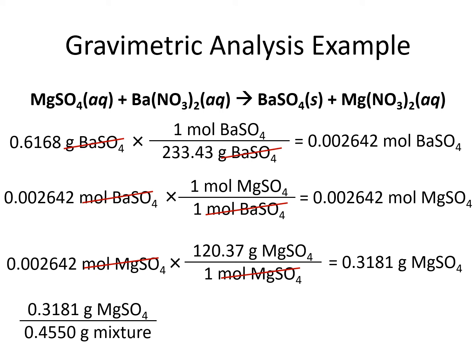We take the amount of magnesium sulfate that was in the original mixture and divide by the mass of the whole mixture, which we were given in the problem — it would have been weighed out in the lab. Finally, we multiply by 100 to get a percentage and come out with 69.91% as our mass percent of magnesium sulfate in the mixture.